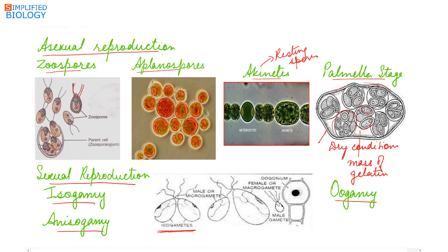Sexual reproduction can be isogamy, anisogamy, or oogamy. Isogamy means the fusing gametes are of the same size. Gametes are formed in the same way as zoospores but are smaller in size and more in number per cell. When gametes are of different sizes it is anisogamy — both are motile. In oogamy, the egg is larger in size and non-motile, while the male gamete is smaller and motile.